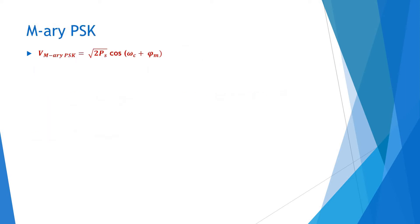For the M-Array PSK system, there are M number of symbols represented by sinusoidal signals of duration Ts = N·Tb, which differ from one another by the phase 2π/M. Thus, the M-Array PSK waveform can be mathematically expressed as: V_MPSK = √(2Ps) · cos(ωC·t + φM), where M is 0, 1, up to M minus 1.